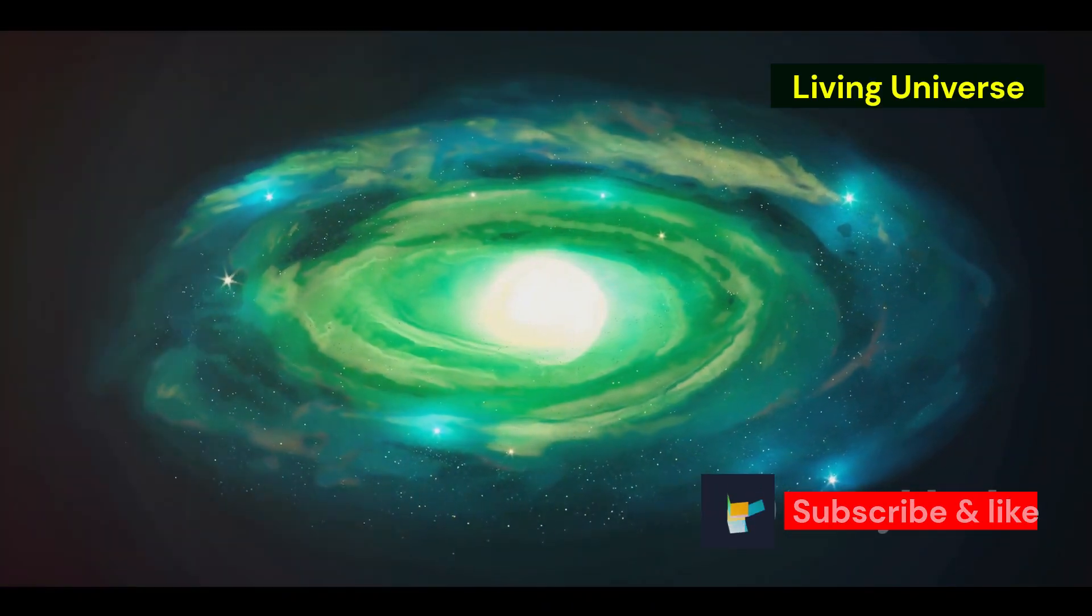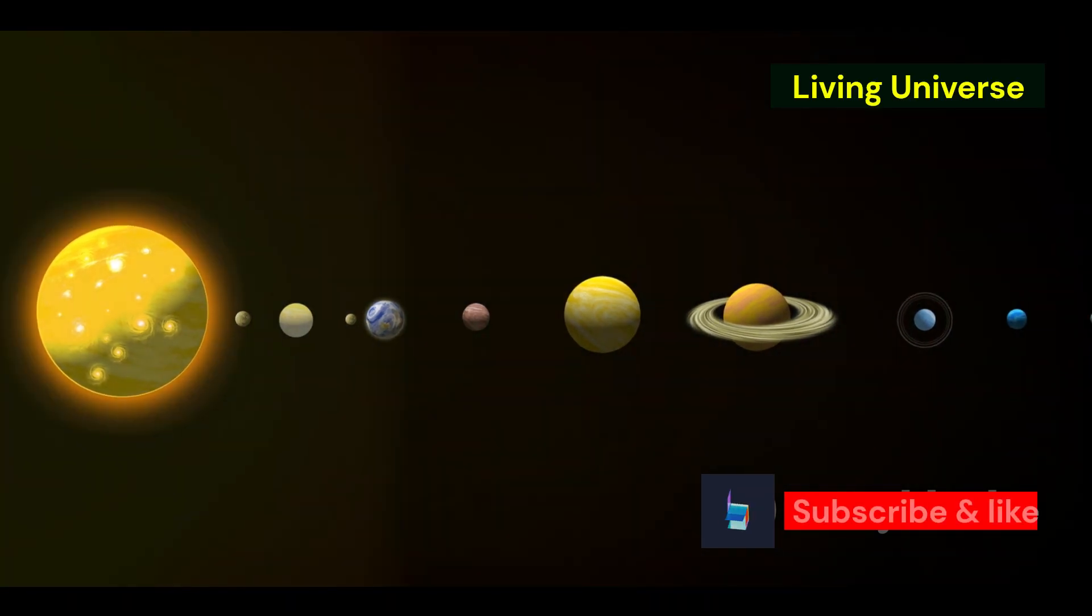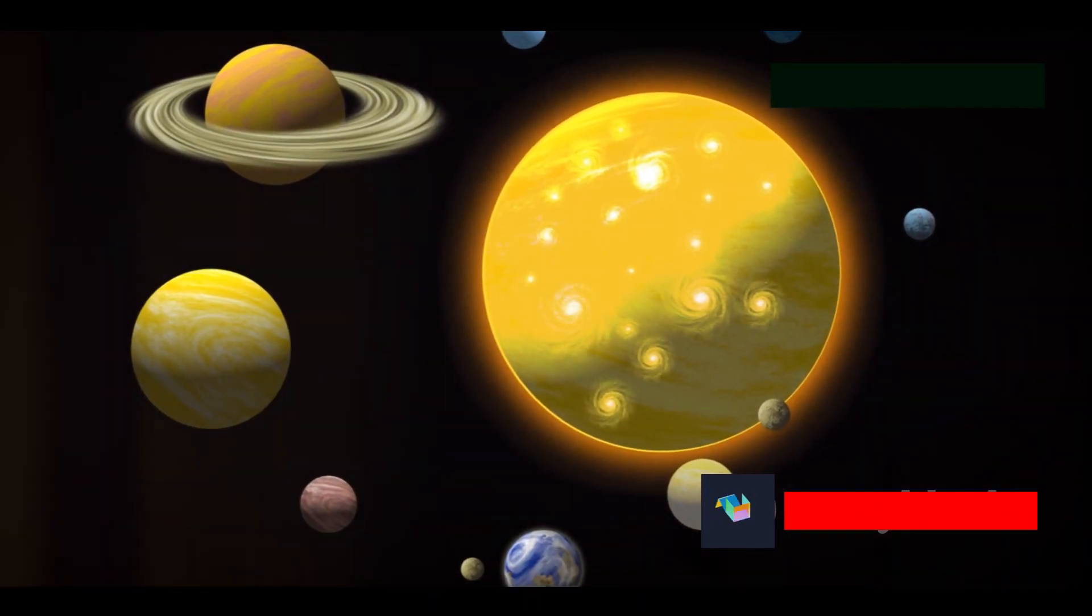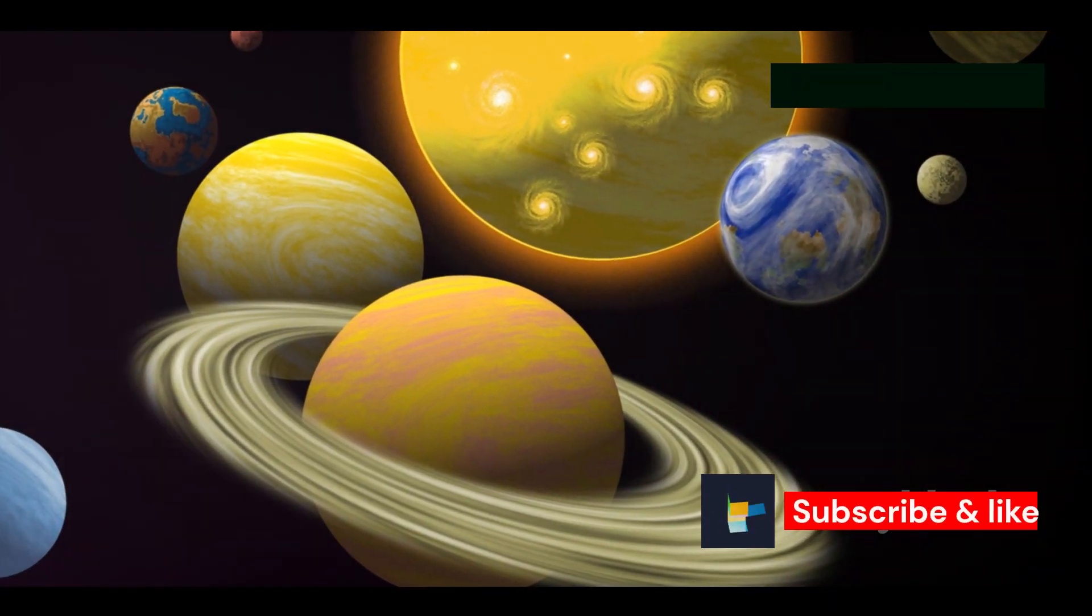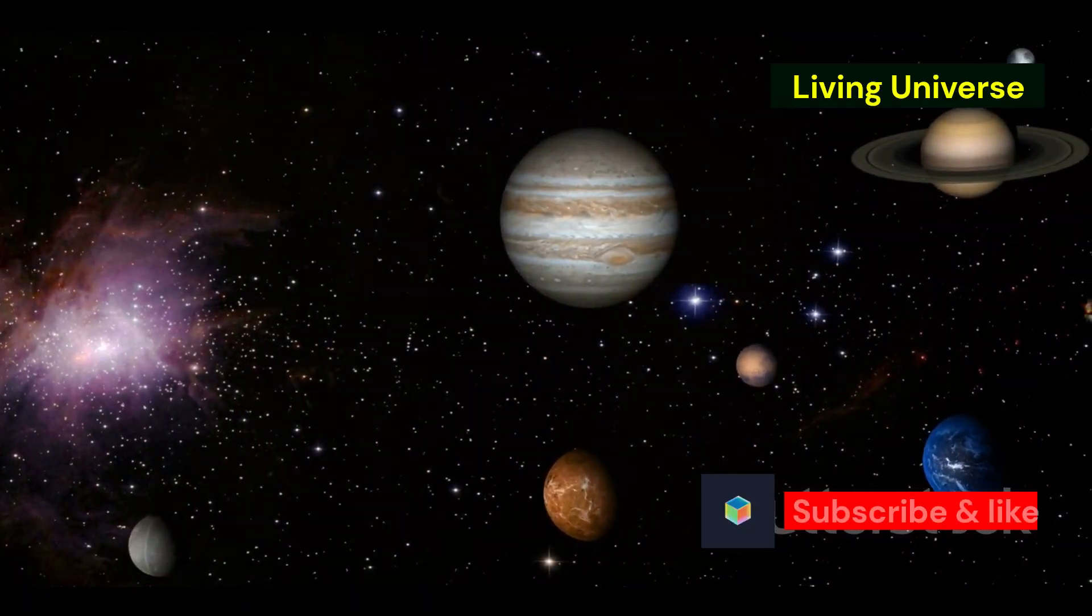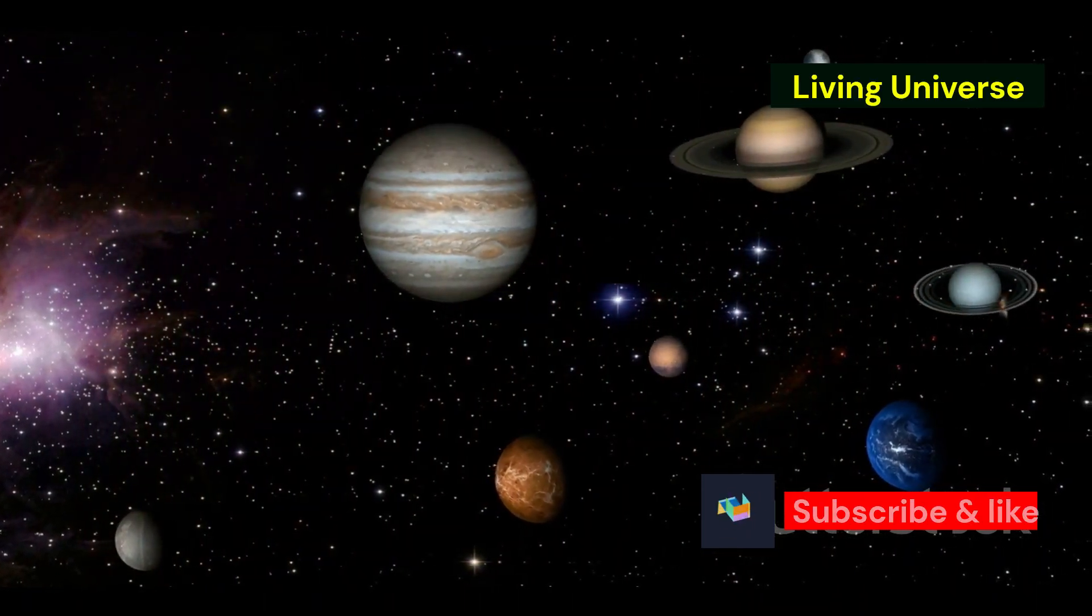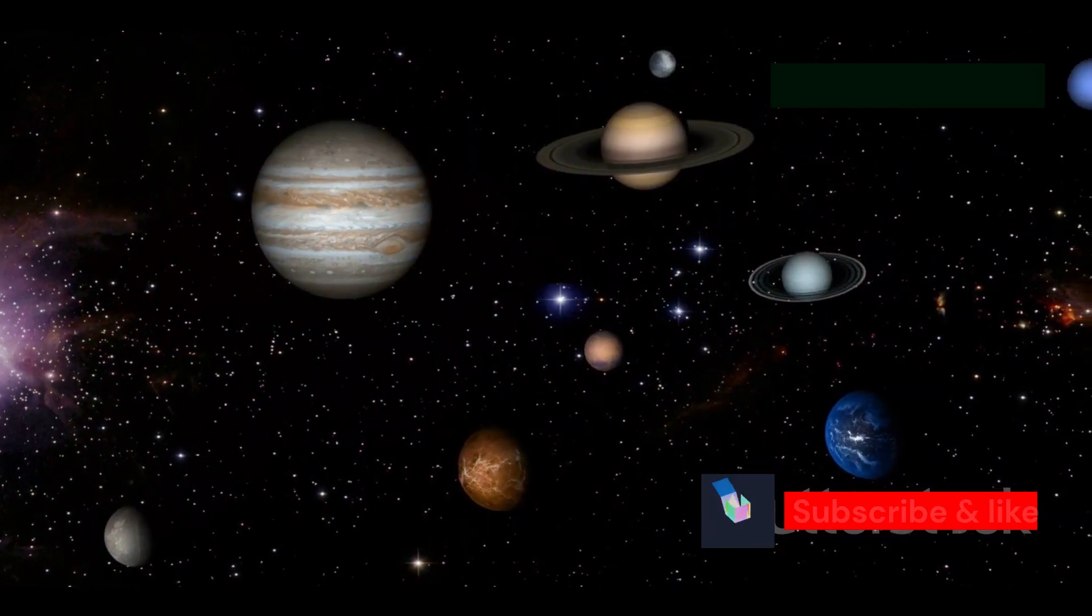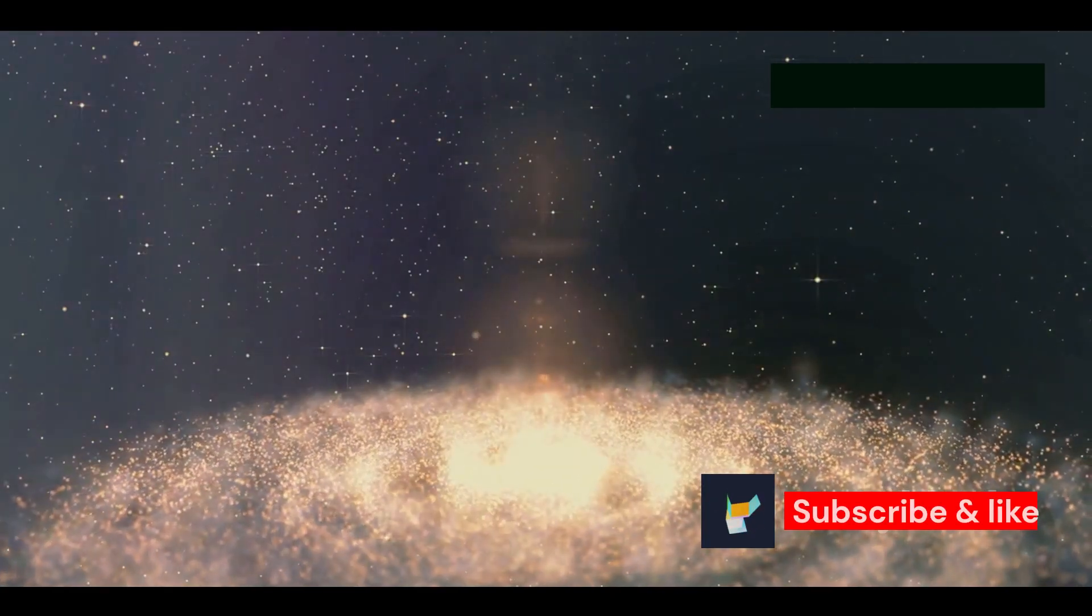So where do we fit into this grand cosmic scheme? Let's start with our home, our planet Earth, a vibrant sphere of life in the vast expanse of space. Earth is one of eight planets in our solar system, revolving around the sun, our source of light and heat. Our solar system is a small part of the Milky Way galaxy, a swirling disk of stars, gas and dust, spread across a hundred thousand light years. And our galaxy? It's just one of two trillion galaxies in the observable universe.